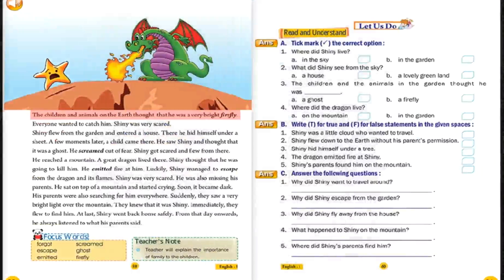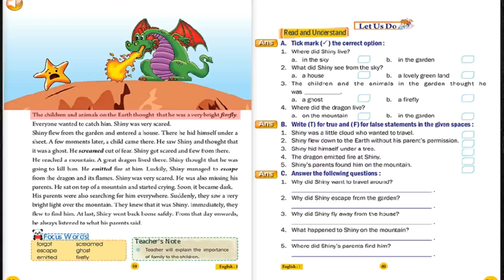The children and animals on the earth thought that he was a very bright firefly. Everyone wanted to catch him. Shiny was very scared. Shiny flew from the garden and entered a house. There he hid himself under a sheet. A few moments later, a child came there. He saw Shiny and thought that it was a ghost. He screamed out of fear.